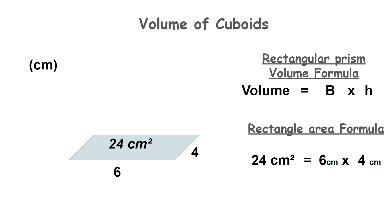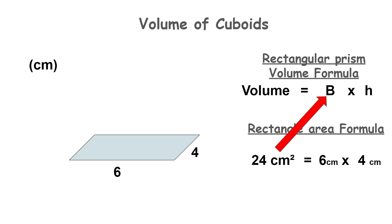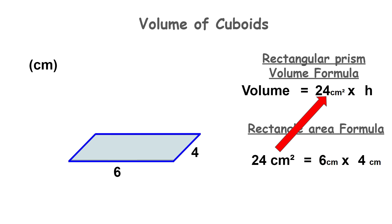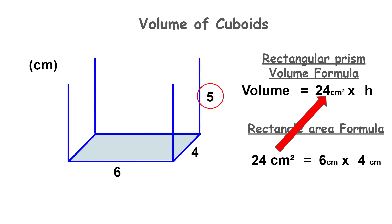So 24 centimeters squared is the area of the base shape of the rectangular prism. The area of the base shape is what capital B represents in the formula for the volume of the rectangular prism, so capital B equals 24 centimeters squared. Now that we've calculated the area of the base shape, we need to multiply this by the height of the cuboid. The height of our rectangular prism is five centimeters, so let's place that into our formula.